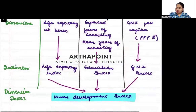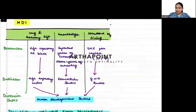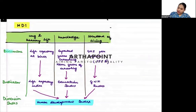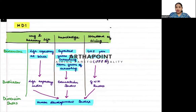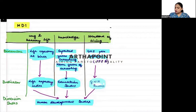You are actually finding the Human Development Index. This is the formula of the Human Development Index. You have three dimensions: life expectancy at birth, expected years of schooling and mean years of schooling, and gross national income per capita. Life expectancy at birth is used to find the life expectancy index. Expected years and mean years of schooling are averaged to find the education index, and GNI per capita is used to find the gross national income index.